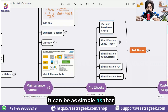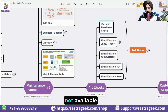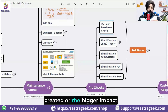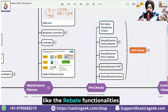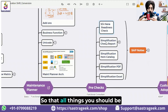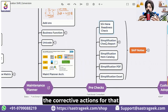The impact can be as simple as your MB1A and MB1B transactions not being available, or vendor and customer cannot be created, or a bigger impact like rebate functionalities not being available. All these things you should know before you move to S4 HANA, and you need to take the corrective actions for them.